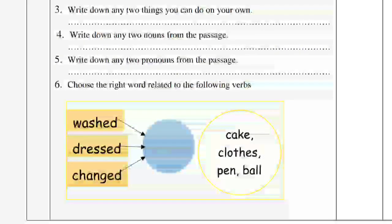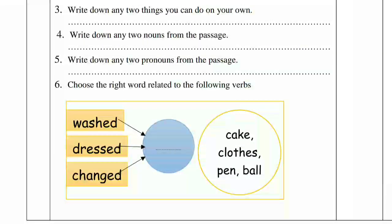Question 6: Choose the right word related to the following verbs. The verbs given are: wash, dress, change. And from the big circle you need to choose one word and write it. Now, can we wash a cake? No. So what can we wash? Actually, clothes. So the correct word that fits all three verbs is clothes.